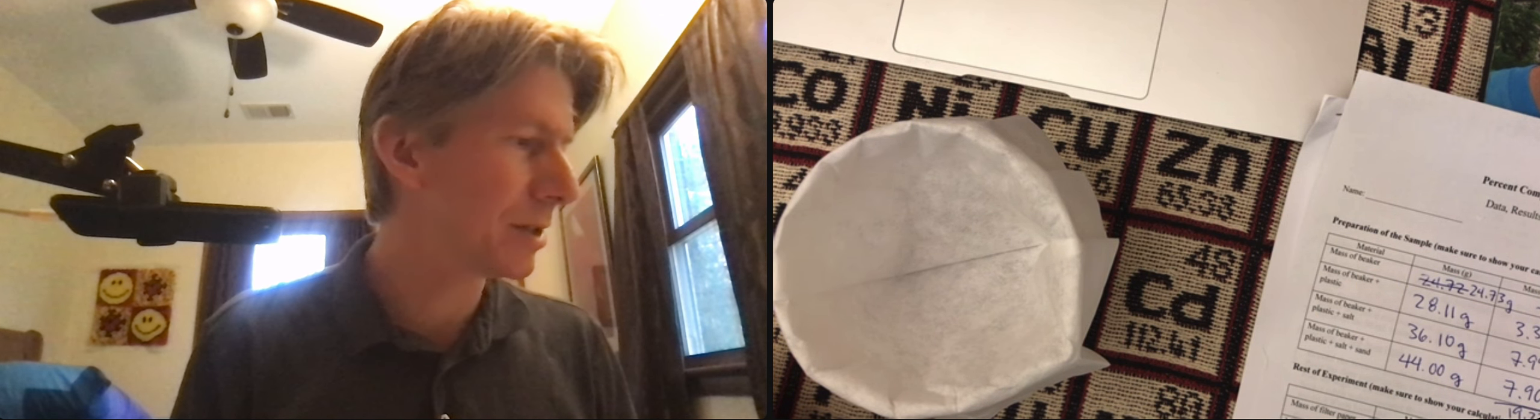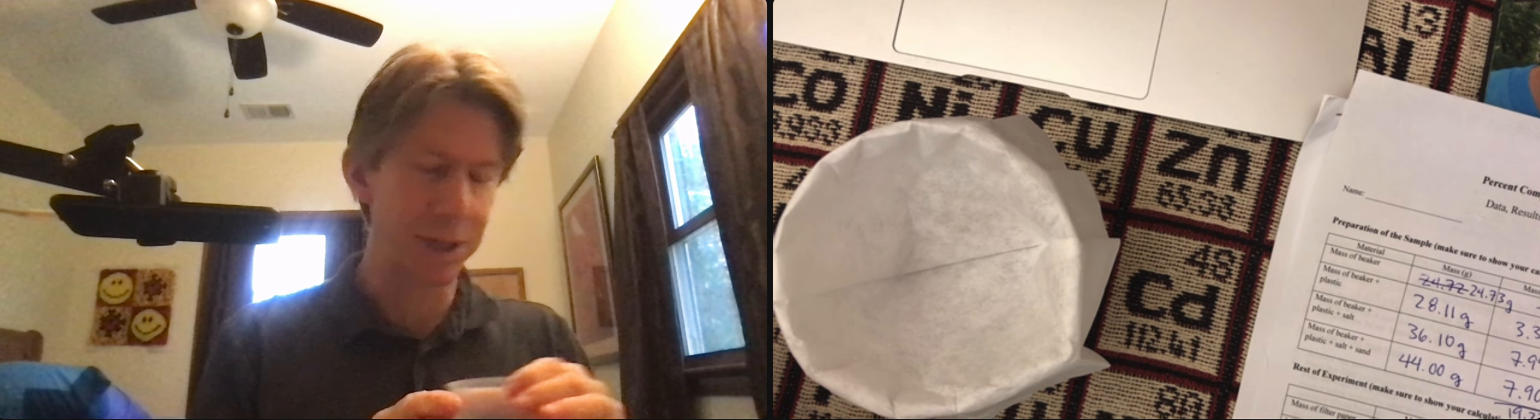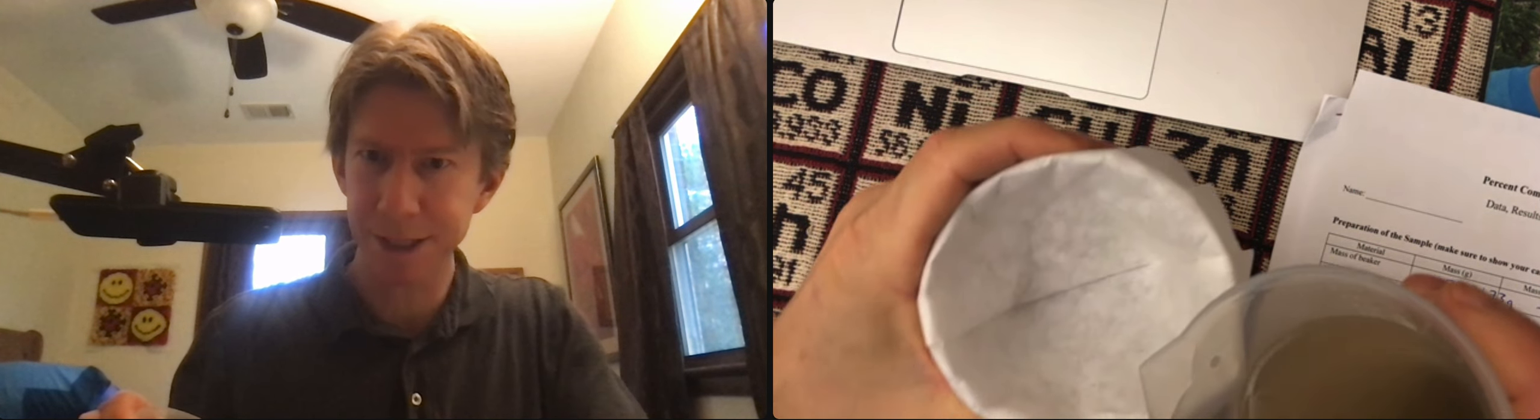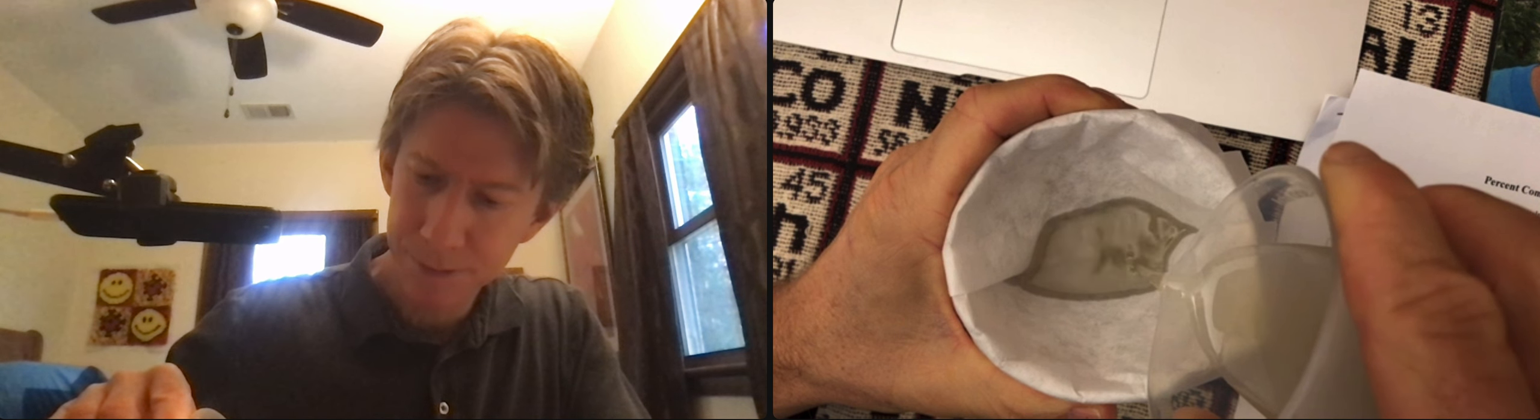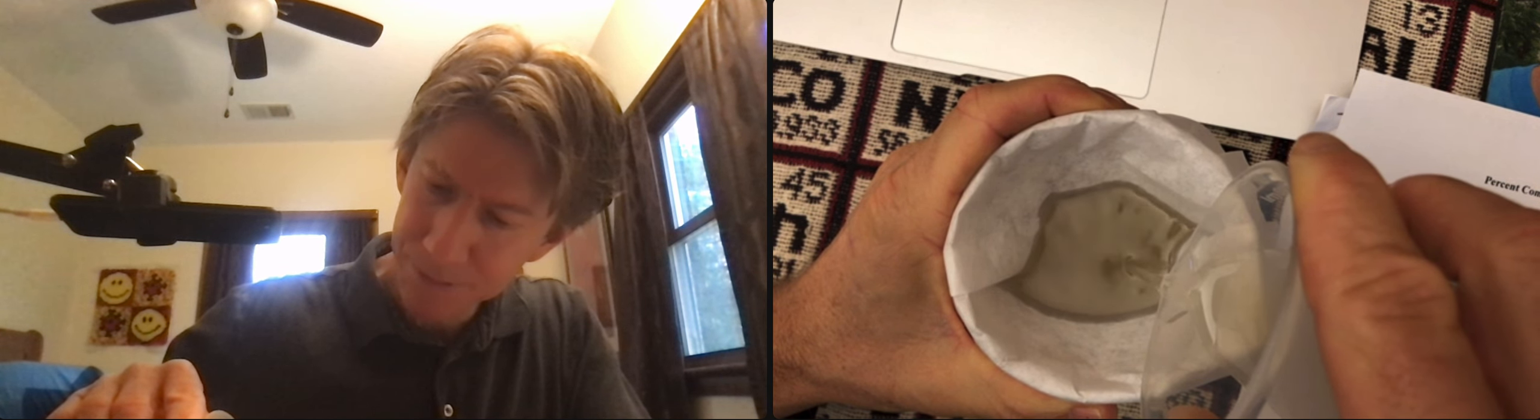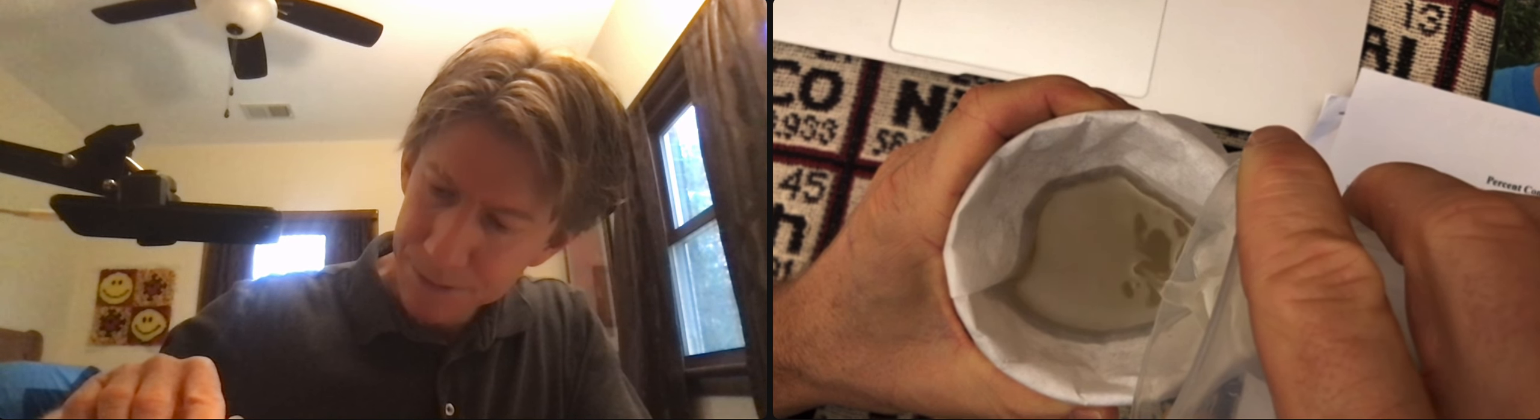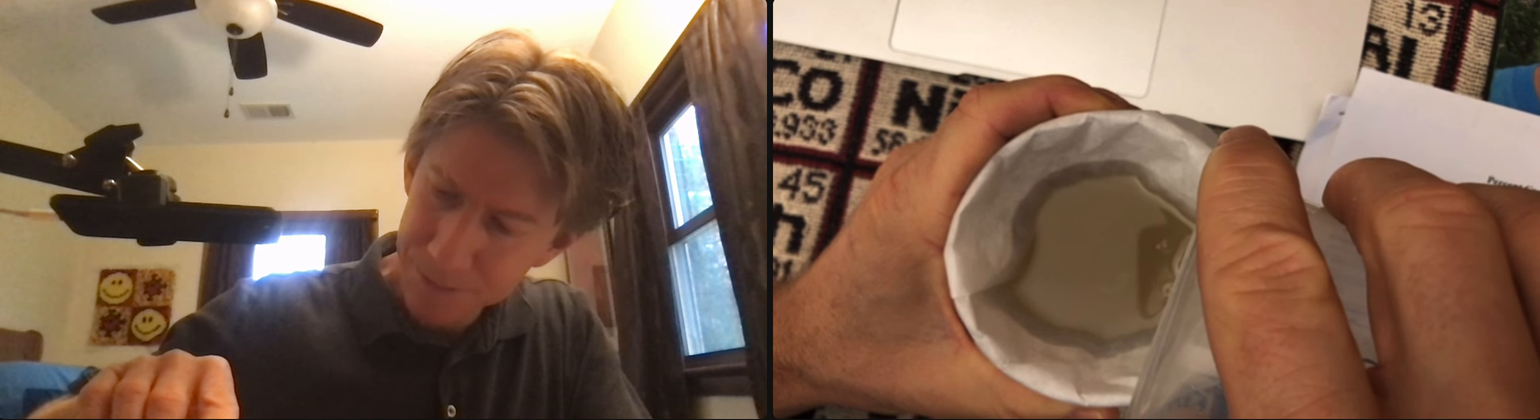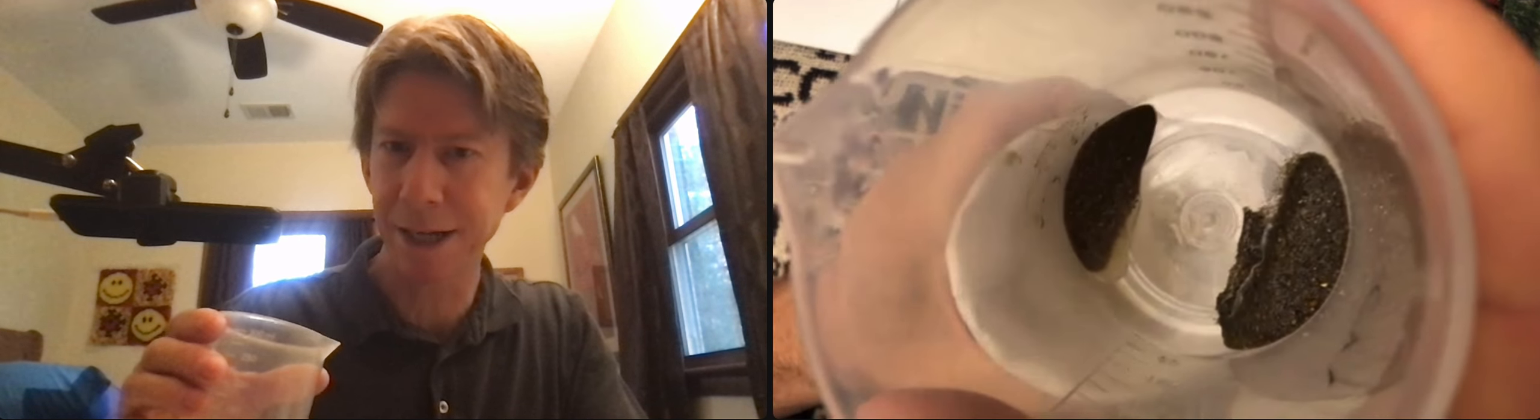Decant the solution from the 250 milliliter beaker into the filter paper, trying to pour only the solution and not the solid as best you can. I've got my solution here, and you can see there's actually some sandy stuff in it, but I'm going to pour it in and hold this. Just pouring the solution as much as you can. As the sand gets close to the edge, it almost takes care of itself because it's a plastic beaker. This is what I've got left in my beaker.